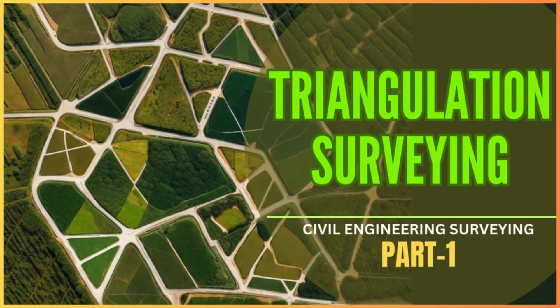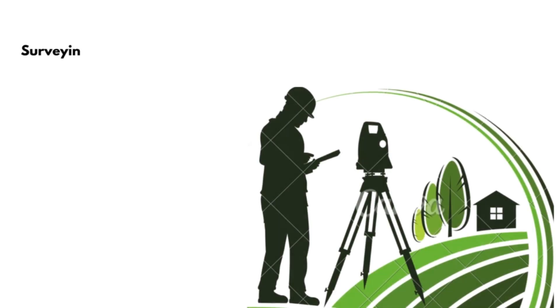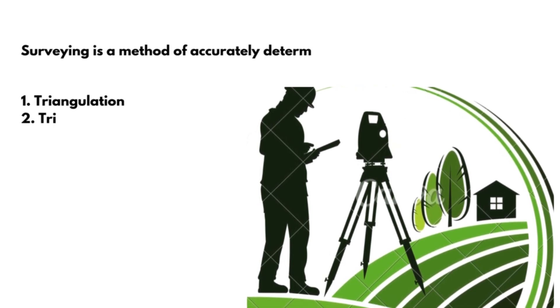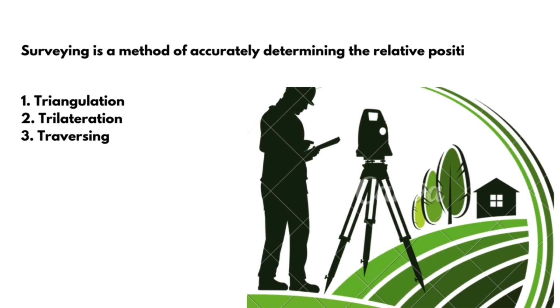This video is on the triangulation method in construction surveying. We know that surveying is a method of accurately determining the relative positions of points on the earth's surface. This involves measuring distances and angles.